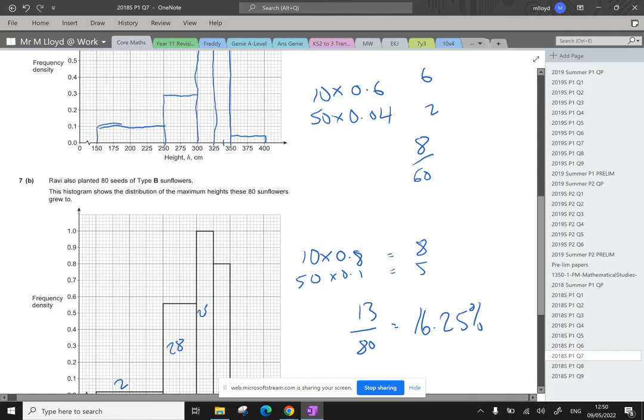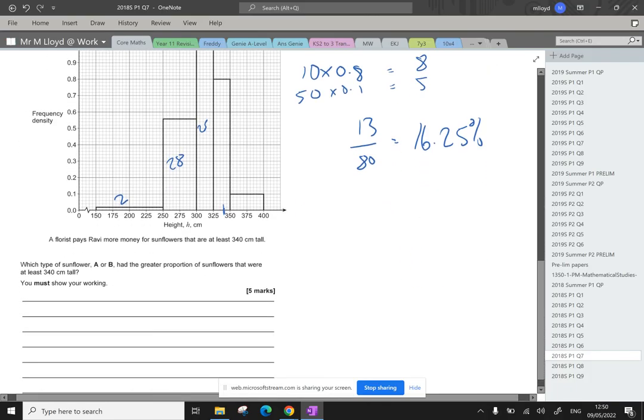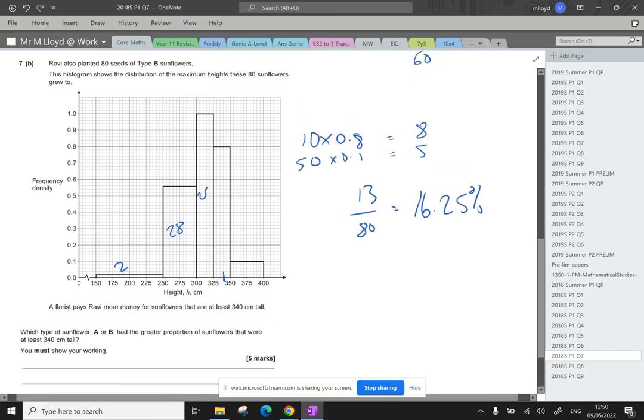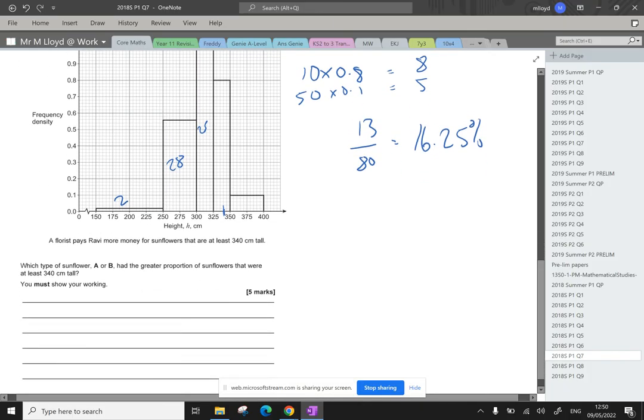So our question is, which type of sunflowers have the greater proportion of sunflowers that were at least 340? So the greater proportion is group B as 16.25% were greater than 340 centimeters tall. As opposed to A's 13.3%. Okay.